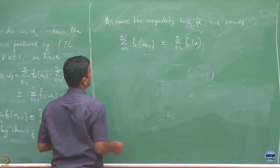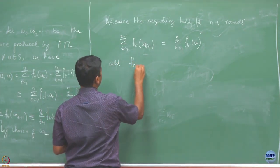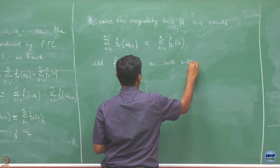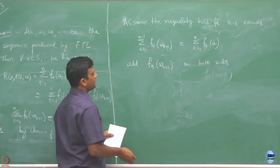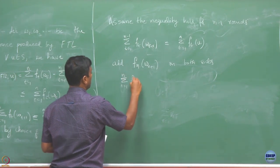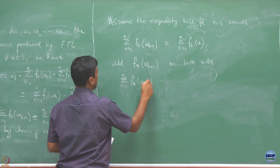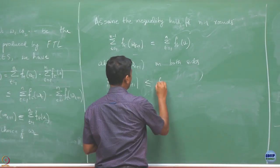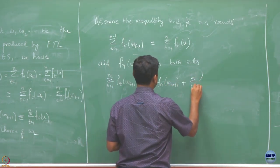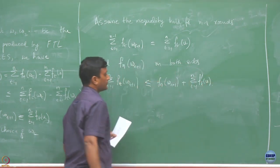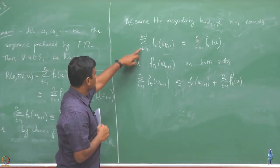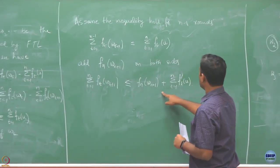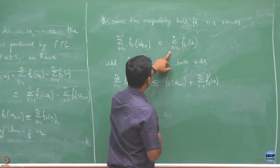What we will do is add on both sides. If I add this term and absorb it inside the summation, this is going to be T equals 1 to n of F_T at W_{T+1}, which is upper bounded accordingly. So instead of n minus 1, I have written n because this term is this one.